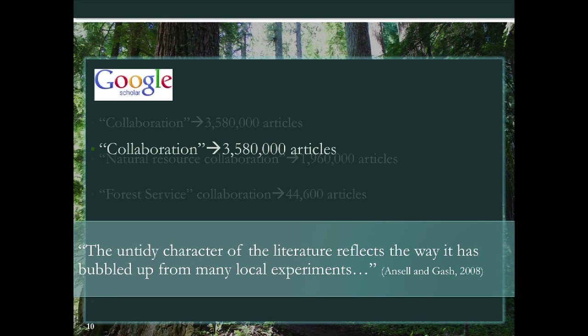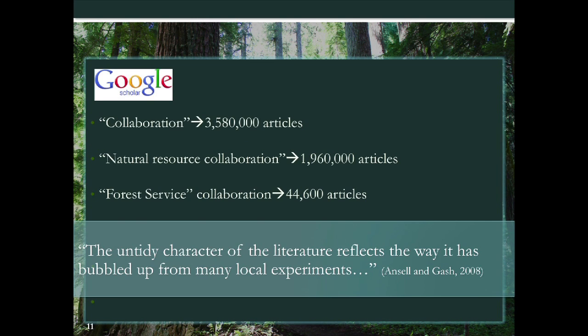Research on collaboration is a messy world, far bigger than our current focus on forest collaboratives — precisely because collaboration has bubbled up everywhere, a lot at the local scale in response to failures of larger systems. If you Google Scholar 'collaboration,' you get over three and a half million hits. 'Natural resource collaboration' gets nearly two million. 'Forest Service collaboration' gets 45,000 — which looks paltry by comparison, but do you want to read 45,000 articles? My point stands: there is so much out there that it can be very hard to make sense of it.